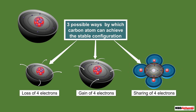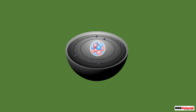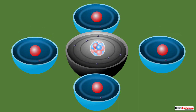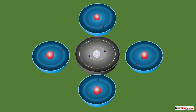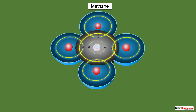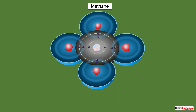A carbon atom is left with the third and last possibility to achieve stable configuration, which is to share the four valence electrons with other atoms. For example, a carbon atom shares its four electrons with four hydrogen atoms. Each hydrogen atom has one electron in its outermost shell, so it shares one valence electron of the carbon atom and achieves noble gas configuration. At the same time, the carbon atom gets to share the valence electron of each hydrogen atom, thereby getting eight electrons in its valence shell. Such a sharing of electron pairs between two atoms results in the formation of a bond known as a covalent bond.